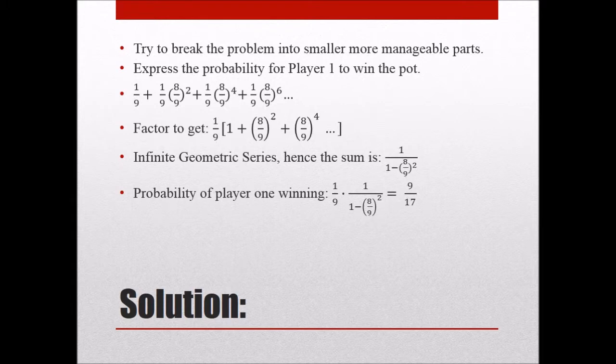So let's put it all together now. So we have one ninth, which was our greatest common factor, and we multiply it by the sum formula, giving us the probability of nine over 17. So that's the probability that player one wins.